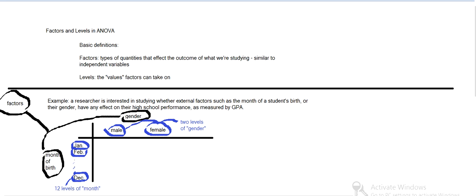And then we can take combinations of the levels. So like January and male, February and male, on down to December and male. So we'll have the students grouped up into 24 different groups. We call those treatment conditions for each combination of the two levels.